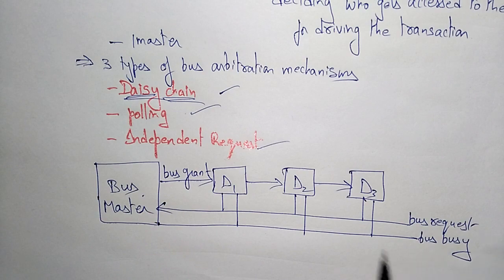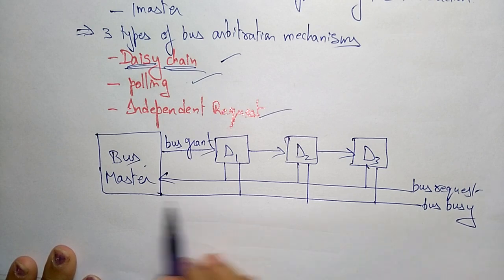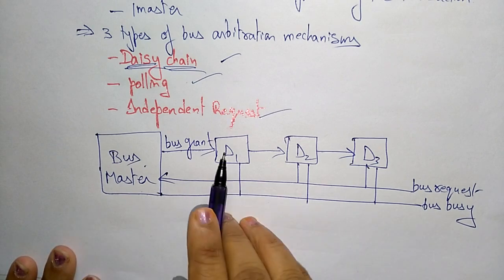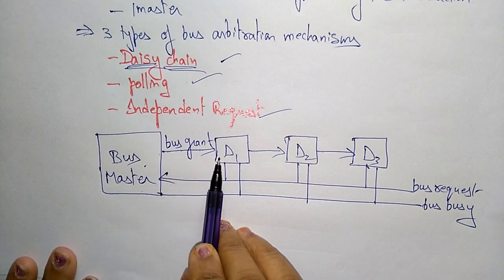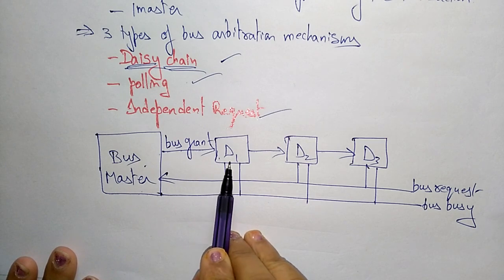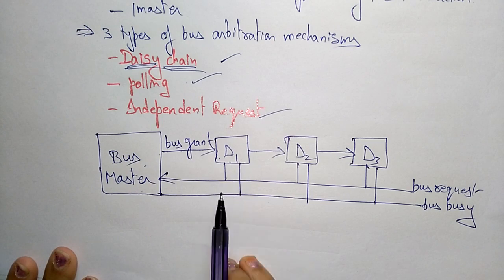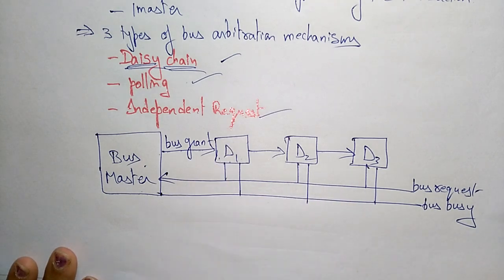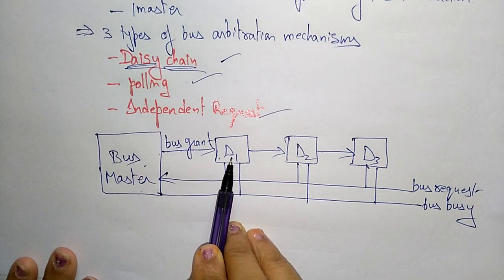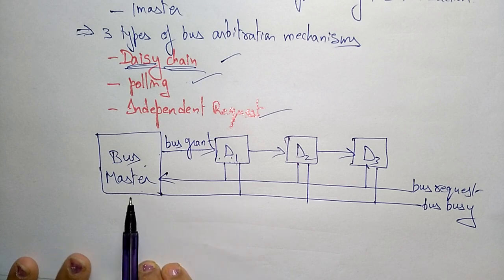The steps work as follows: if the bus is not busy, make a bus request. Whenever no device is using the bus, the bus master grants the bus to device one first. When device one takes the bus grant, it sends a signal to other devices indicating that the bus is busy, so D2 and D3 must wait until D1 releases the bus.